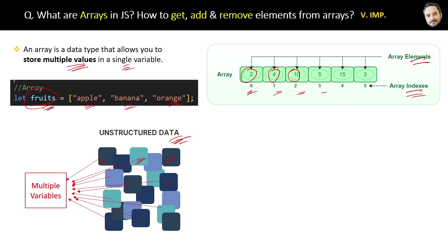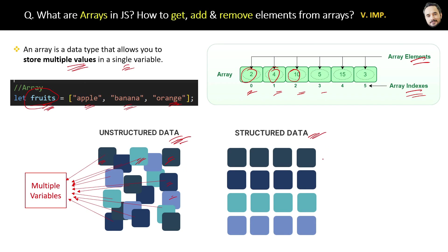But we can structure this unstructured data with the help of arrays. Here, different types of data will be in very few arrays, which is also very easy to maintain. So that is the advantage of arrays: to structure the data in a better way.